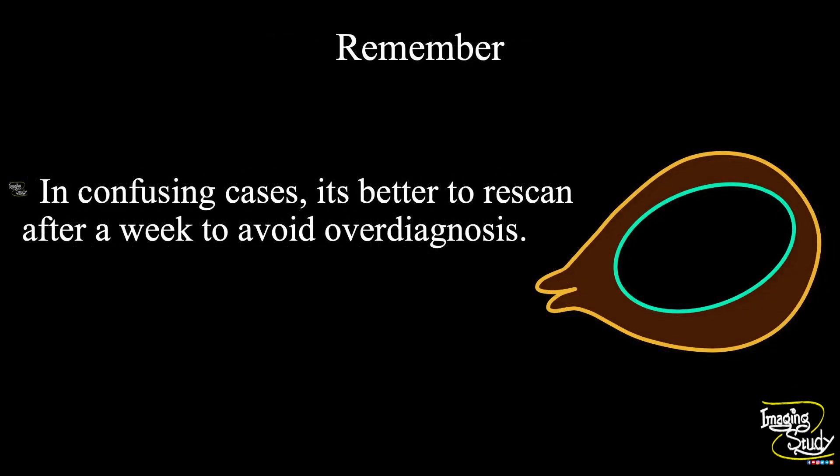The take-home message: we usually diagnose blighted ovum when the gestational sac diameter or mean sac diameter is more than 25 millimeters on transabdominal ultrasound without any embryo. If you have a very poor quality machine or if the patient is bulky, it is better to rescan the patient after a week to avoid over-diagnosis. In these cases, we sometimes wait up to 30 millimeters before calling it a blighted ovum.